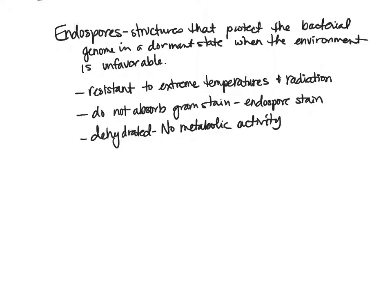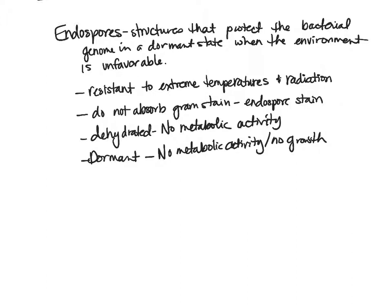A vegetative cell is alive — it has water, cytoplasm, and is actively going through enzymatic activities: breaking down carbon, sulfur, phosphate, metabolizing, eating, eliminating, and making copies of itself. An endospore, however, is doing none of those things. It is a very dehydrated structure with no metabolic activity and no growth — completely dormant, waiting for a better environment.